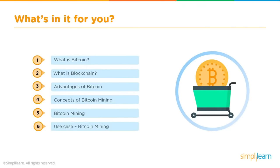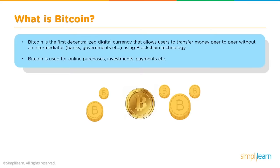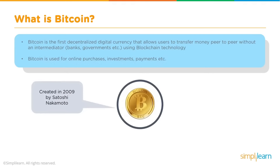Bitcoin is the first decentralized digital currency that allows users to transfer money peer-to-peer without any intermediaries like banks, governments, agents, or brokers — all done using blockchain technology. Bitcoin can be used for online purchases, e-commerce transactions, as an investment instrument, and primarily for payments to buy goods and services. It was created in 2009 by a person or group of people called Satoshi Nakamoto.